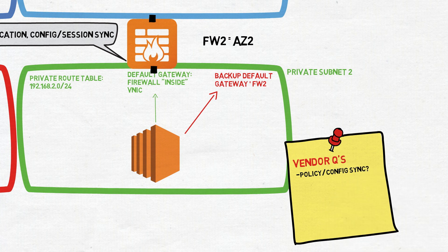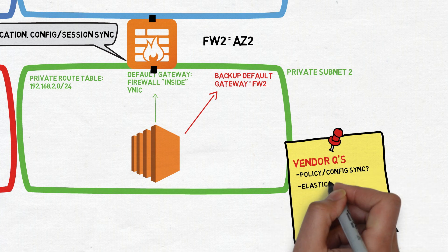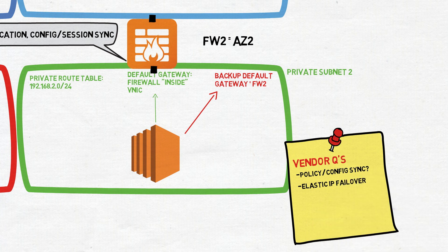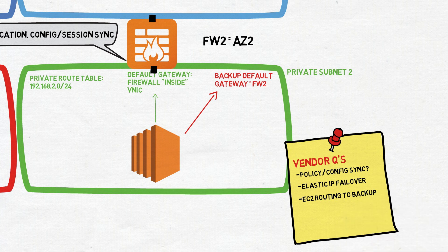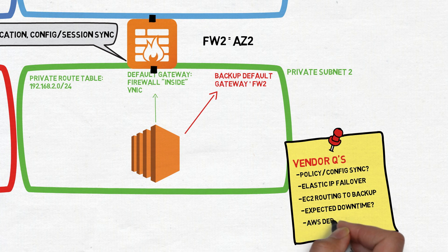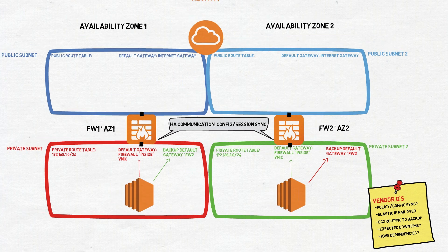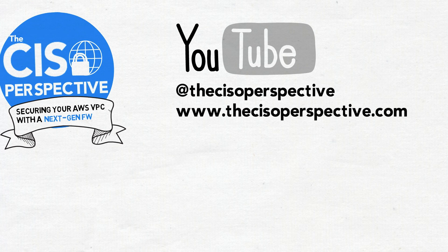Some basic questions you may want to research for the vendor are things like: How are my policies and sessions synced between an HA group? How are Elastic IPs handled during a failover? How will a private instance route to the backup in case of a failure? How much downtime should I expect? What, if any, are the dependencies on other AWS resources? Some vendors rely on CloudWatch, Lambda, or a small EC2 instance to work properly, all of which will incur an additional cost.